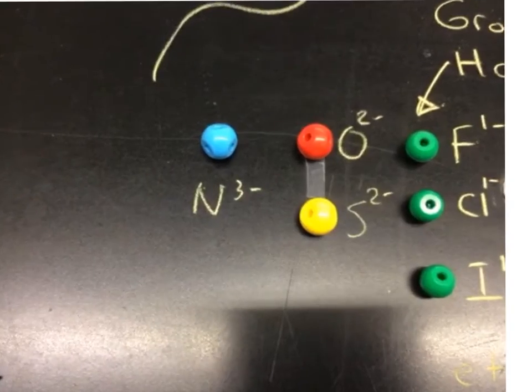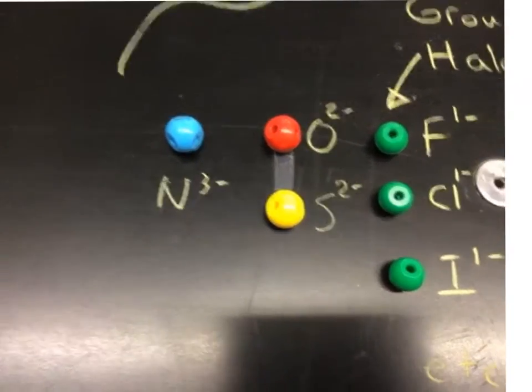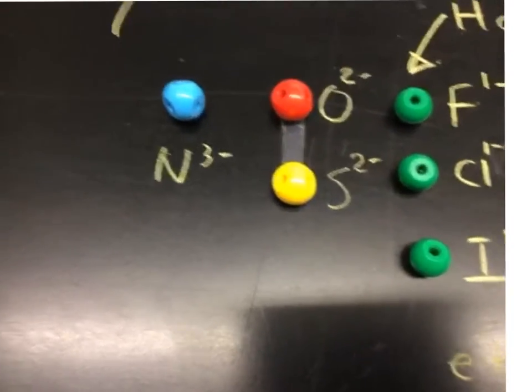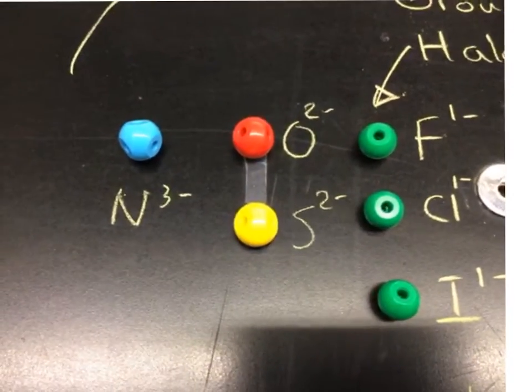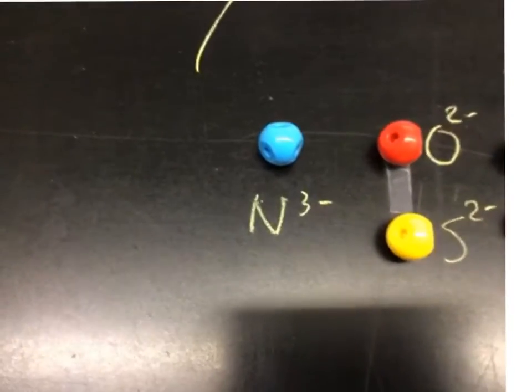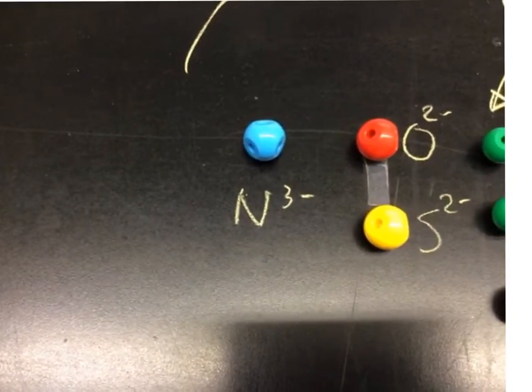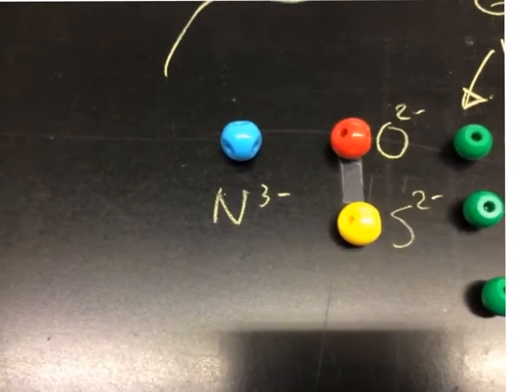Oxygen is the red. It has two holes. Sulfur is yellow. It also has two holes representing the two electrons that it wants to be full. Nitrogen is blue. It's a three minus because it needs three electrons.